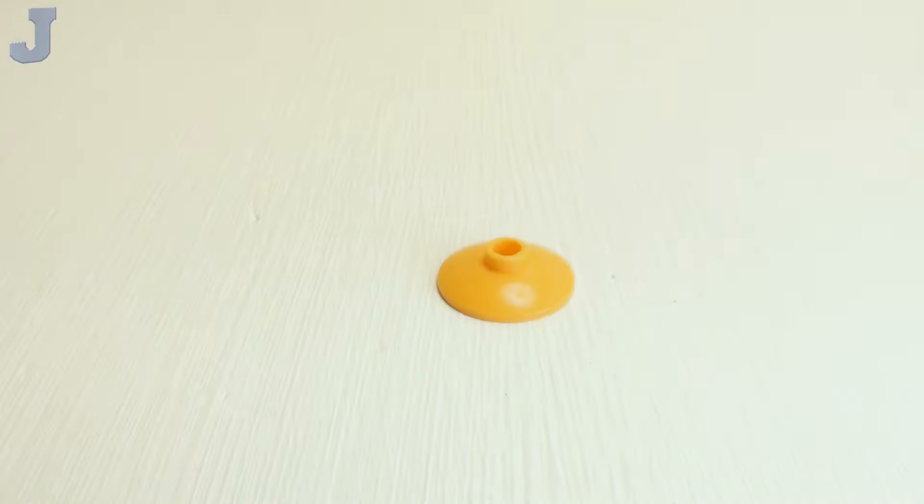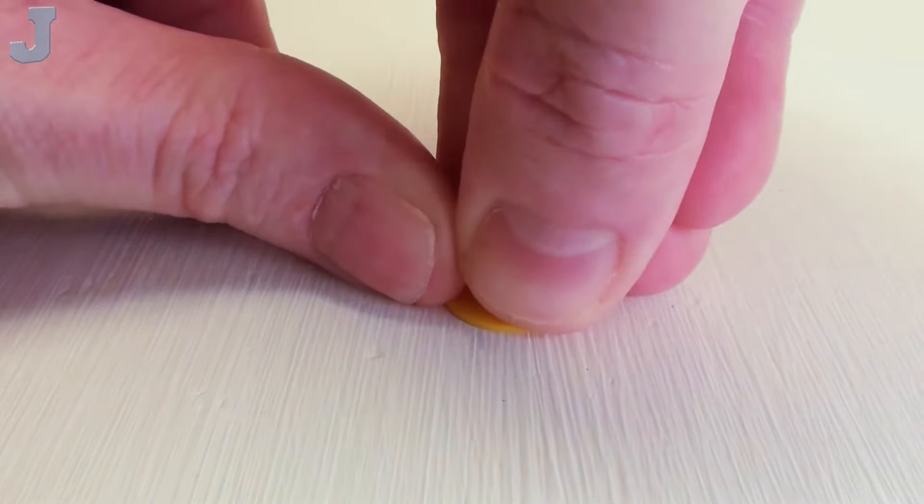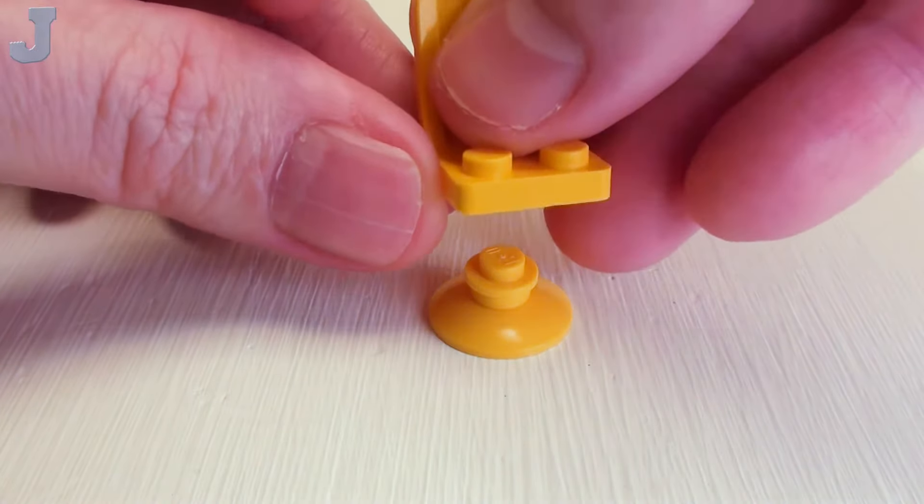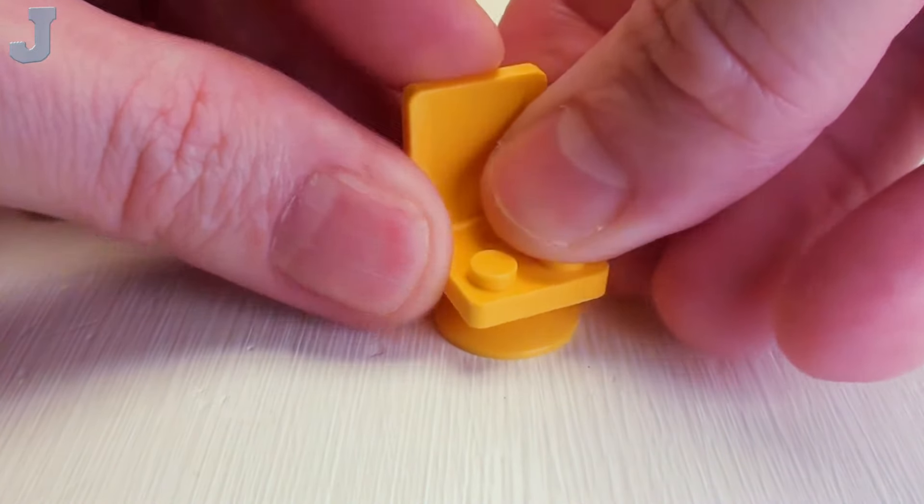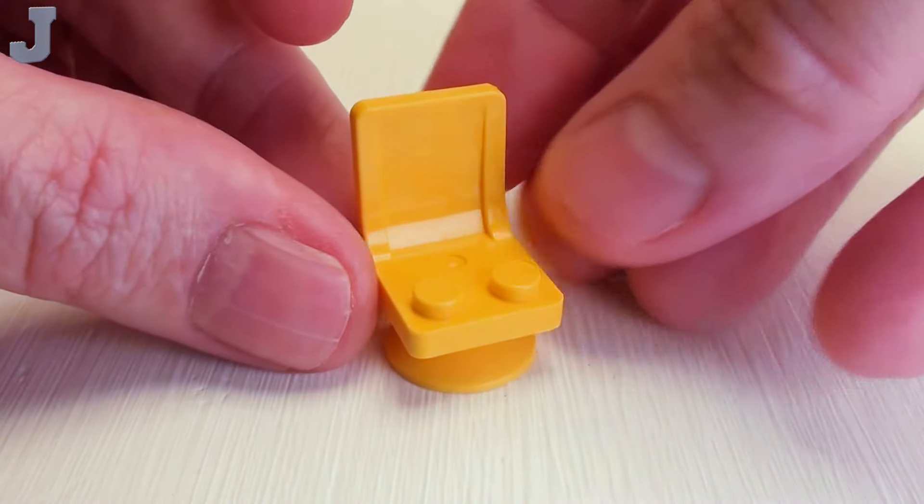For a set of patio chairs, start with a 2 by 2 parabola dish. I'm going to place a stud right on top, and we're going to set a 2 by 2 by 2 seat right on top. Just be sure that the stud is inside the tube. We're going to make four of these.